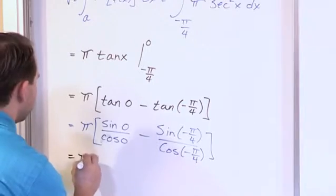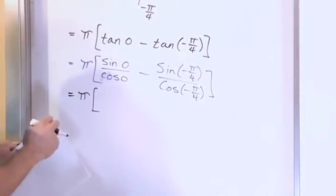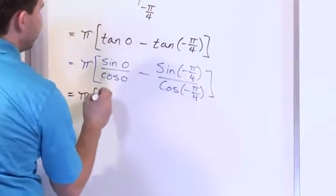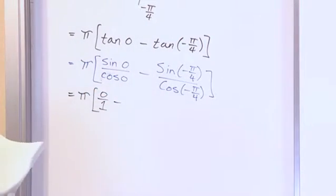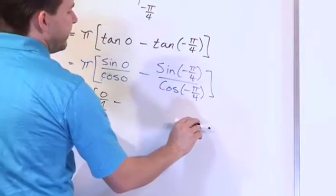So I have pi. What is the sine of 0? The sine of 0 is here. It should be 0. Cosine of 0 should be 1. So that takes care of that term.